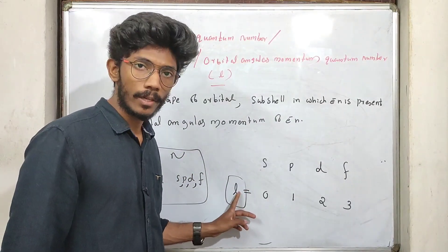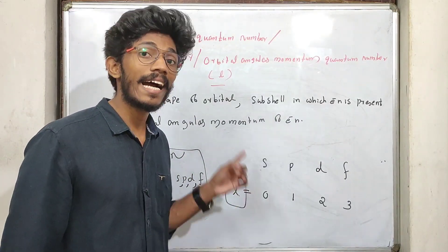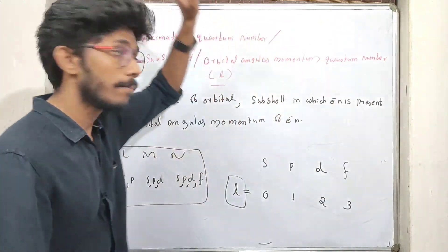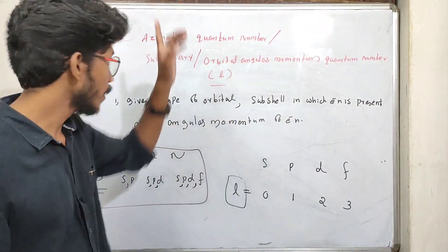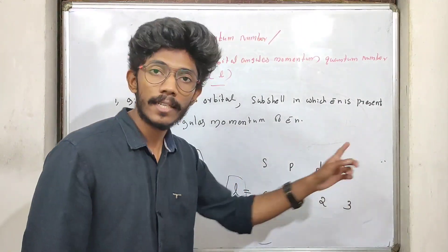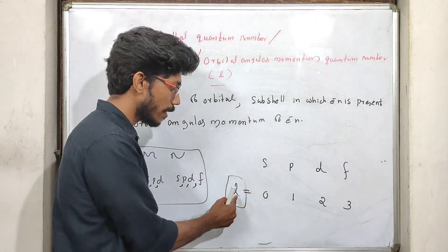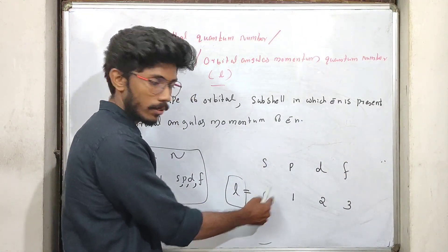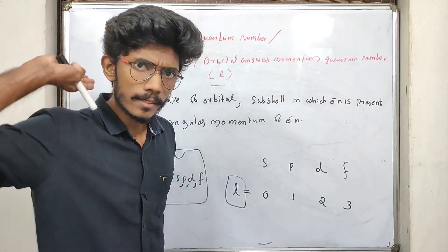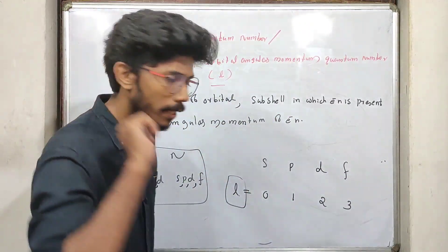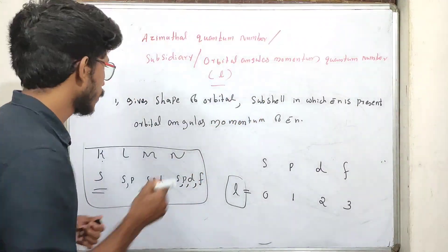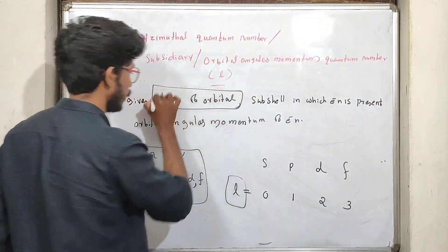What does the L value indicate as a sub-shell? For S, L value is 0; for P, L value is 1; for D, L value is 2; for F, L value is 3. Clear. Now, how do we use the properties?